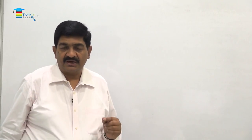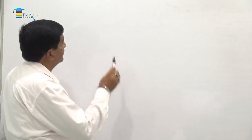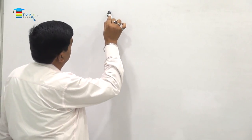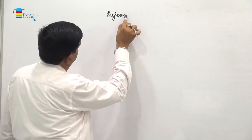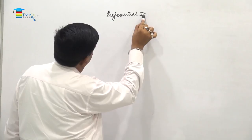We have been talking about SEBI ICDR regulations. Earlier we have already covered the SEBI Act and some important provisions of ICDR regulations. The chapters already covered are: number one, eligibility for making public issue; number two, pricing; and number three, promoters' contribution. The next important topic is preferential issue.